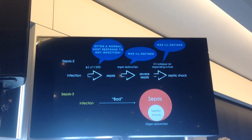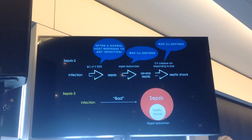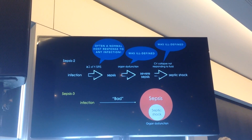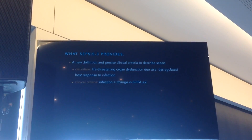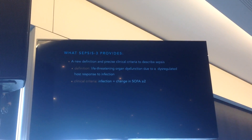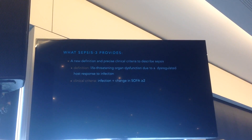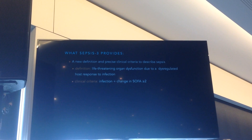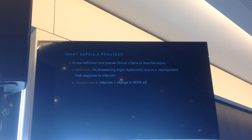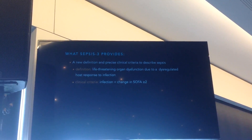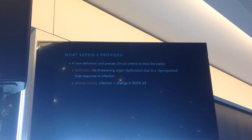The septic shock component is a group who are at much greater risk of dying than from sepsis alone — about a 50–60% increased risk. The new definition brings up to date our current thinking of pathophysiology: a dysregulated host response causing life-threatening organ dysfunction, and we're using a change in SOFA score of two or more in the presence of an infection to operationalise this definition.